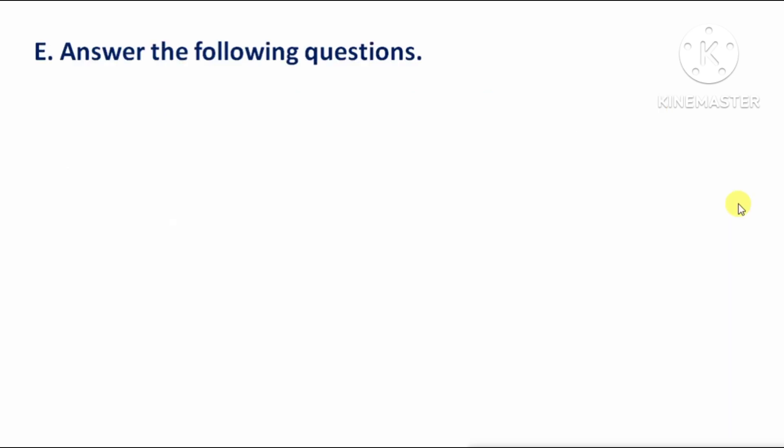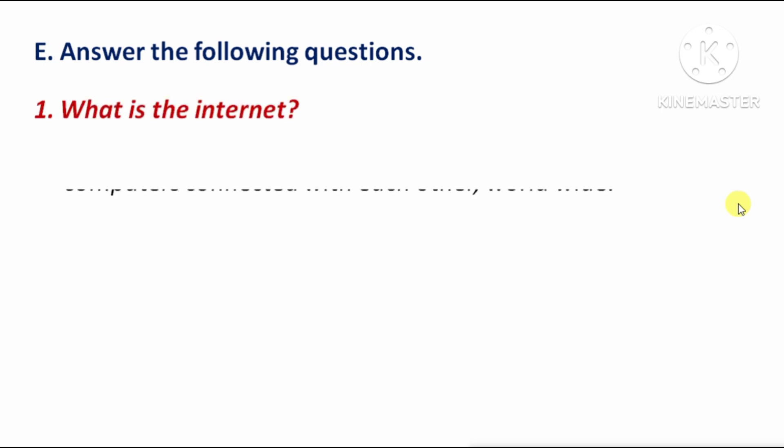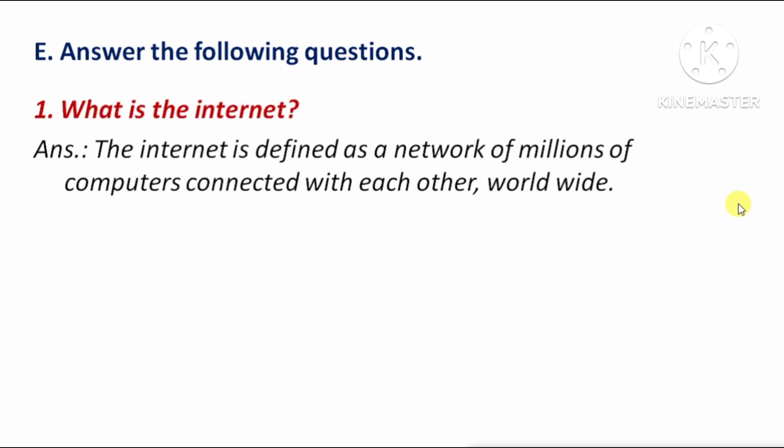Answer the following questions. First question: What is internet? — means internet kya hai? Answer: The internet is defined as a network of millions of computers connected with each other worldwide — means internet millions of computers ka network hai jo ek doosre se connected hote hain, vishwa star par.